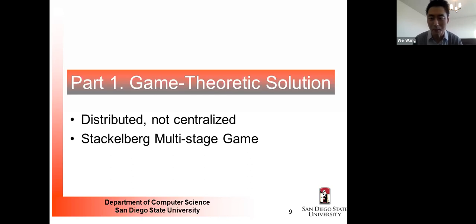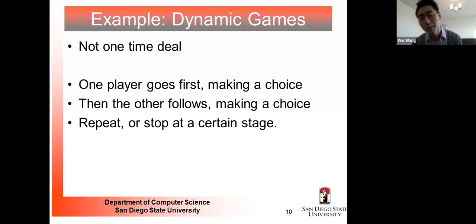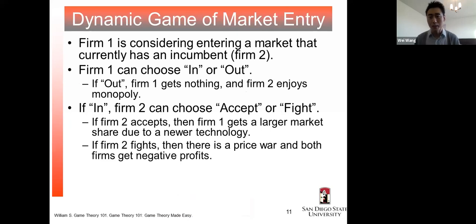The beauty of using game theory is that it is distributed — not a centralized solution. Each player makes decisions locally and they reach an equilibrium, a stable state neither wants to deviate from. In this study, we use the Stackelberg game, which is a multi-stage dynamic game. One player goes first as the leader, the other responds as the follower, and they may repeat until a certain stage. Before diving into details, let's use a toy example to explain the philosophy.